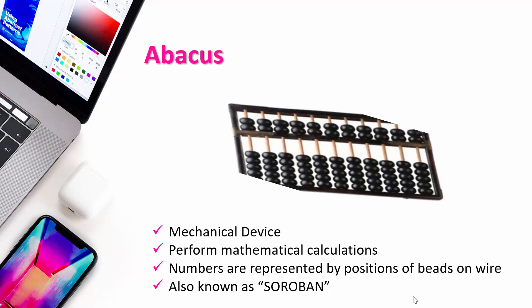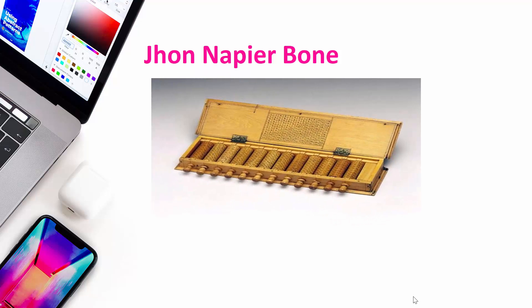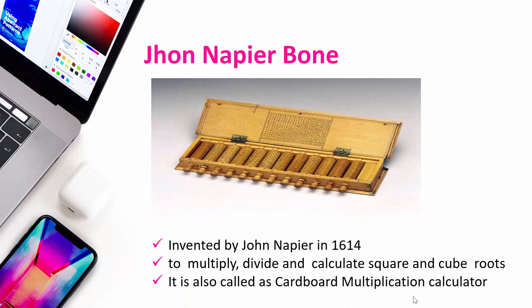The second device used for calculation is known as John Napier Bones. It looks like this. It was invented by John Napier in 1640. John Napier Bones is used to multiply, divide, and calculate square root and cube root. It is also called a cardboard multiplication calculator, as it mainly performs multiplication and division.